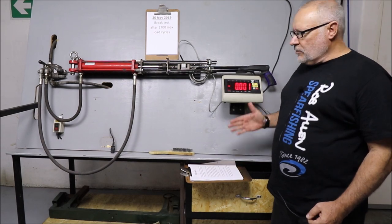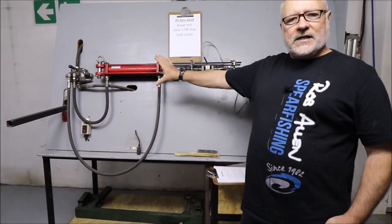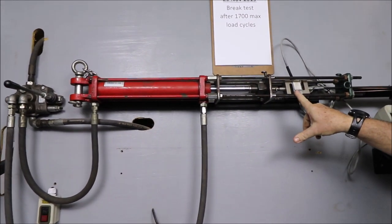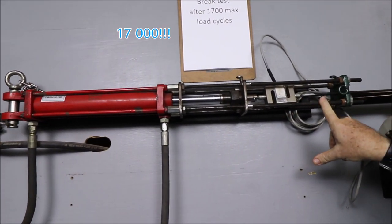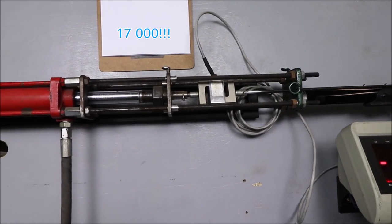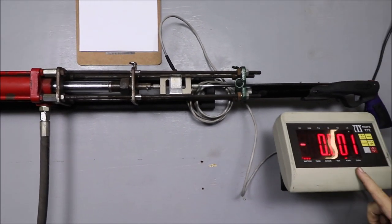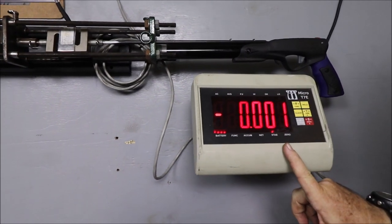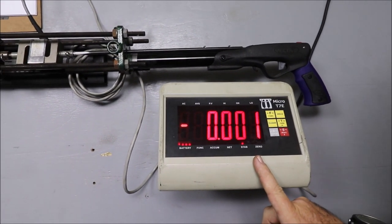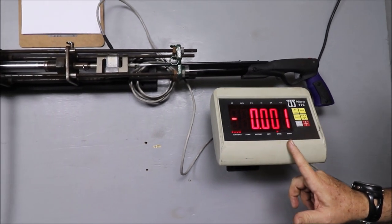First, let me show you the machine itself. It has a hydraulic ram that's pushing a spear. The spear is attached to a load cell, and this load cell is linked to a screen here which will show you the actual kilograms that it's pulling. The hydraulic can run forward or reverse, in other words pushing or pulling.